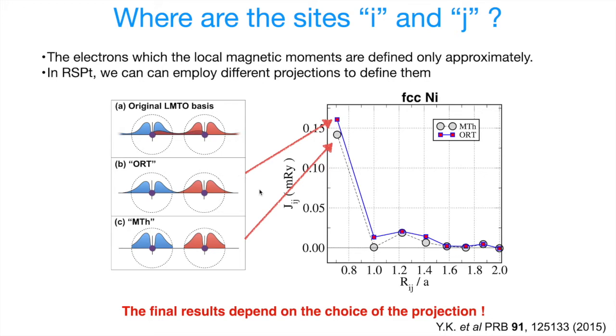So in RSPT, we commonly use these two projections. And as you can imagine, since the projections are different, the results can also be a little different. And in general, your JIJs will unavoidably depend on the choice of this projection. However, quite often you get quite similar results with both projections.